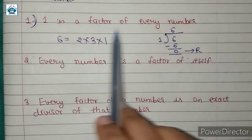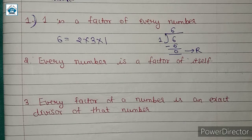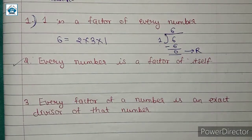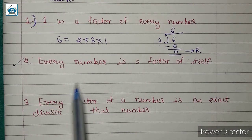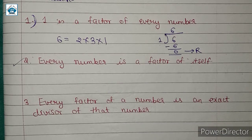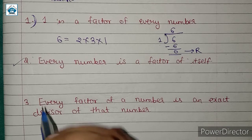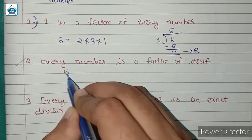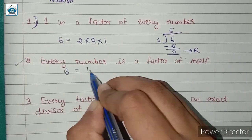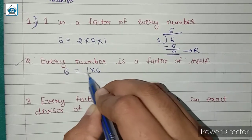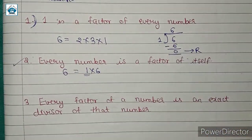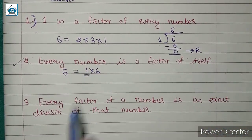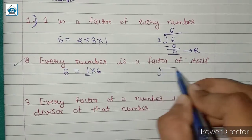The second conclusion is: every number is a factor of itself. For example, 6 can be written as 1 multiplied by 6. We already saw that 1 is a factor. Now, 6 is also a factor of the number 6 for the same reason — when we divide 6 by 6, we get 6 ones are 6, and on subtracting we get 0, so it is completely divisible.